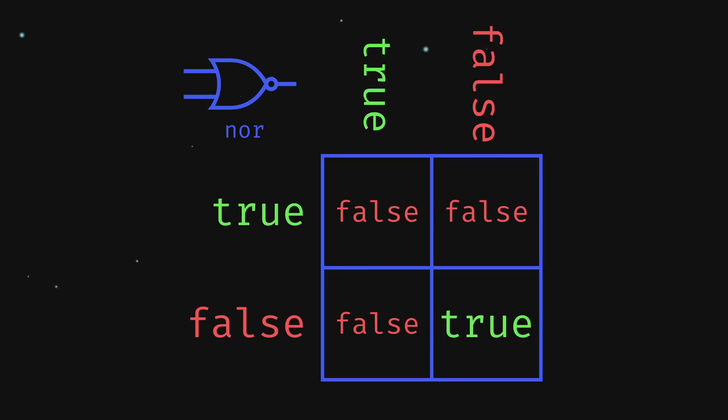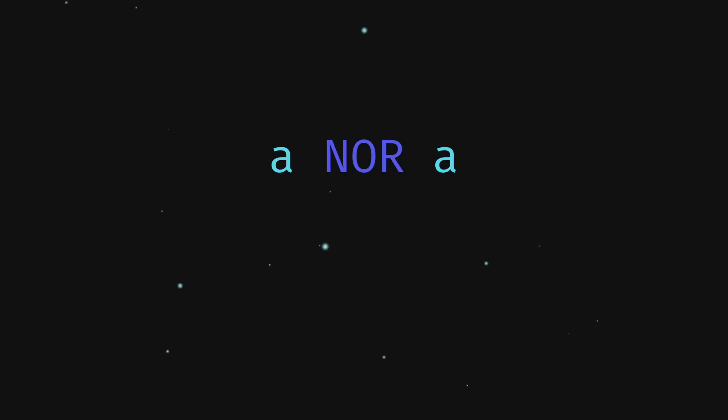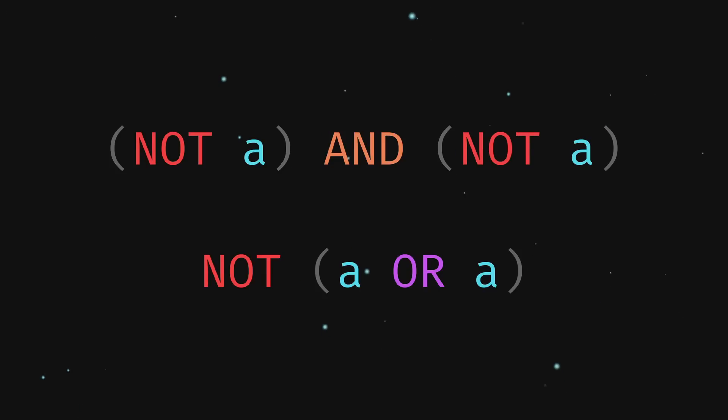Take a look at what happens when we pass the same value twice to NOR. You get the opposite of the inputs. In other words, a NOR a will be the same as just not a. If we use either of the above replacements of NOR, we can simplify everything away and confirm that we are left with just not a.